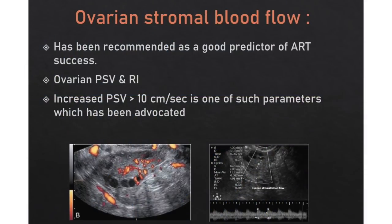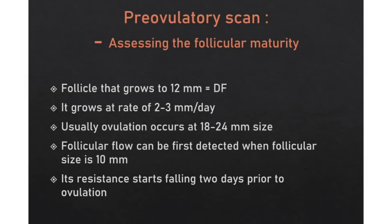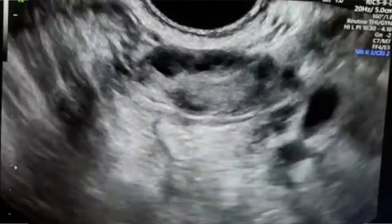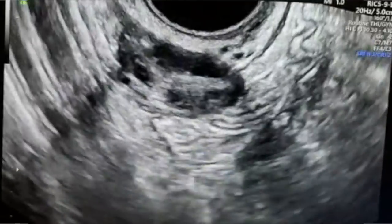Ovarian stromal blood flow has been highly recommended as a good predictor of ART success. Increased PSV of more than 10 cm per second is one such parameter which has been advocated. Follicular maturity can be assessed by plasma estradiol levels, but frequent assessment of blood estradiol is a very cumbersome procedure, so ultrasound monitoring has totally replaced estradiol monitoring in most centers. Therefore, we do pre-ovulatory scans for assessing follicular maturity.